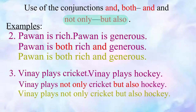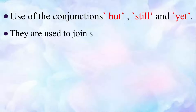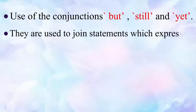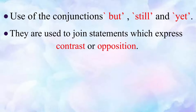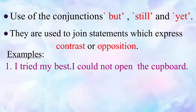Let us now see the use of the conjunctions 'but', 'still', and 'yet'. These conjunctions are used to join statements which express contrast or opposition. Let us look at some examples. The first sentence is 'I tried my best' and the second sentence is 'I could not open the cupboard'. These two statements express contrast or opposition with each other.